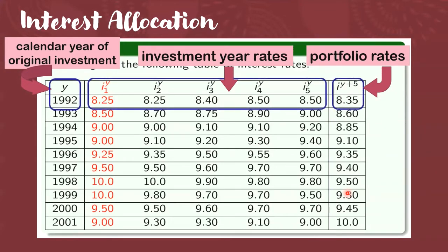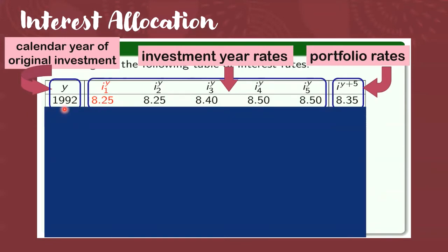So, mag-focus tayo sa mga values na ito. Okay, so we consider the calendar year 1992. Tapos as you can see, here are our notations for investment year rates. So yung mga y dito, palitan nyo ng 1992. Yung I_1^1992, ibig sabihin ito yung rate, ito yung interest rate na gagamitin para sa investment mo. Yung I_2^1992, ibig sabihin nasa second year ka na at ito yung gagamitin interest rate, 8.25. Again, 1992 pa rin yung year dito. Ibig sabihin, nag-start ka ng investment mo noong year 1992 and this is your second year. So parang ganito, ito yung year 1992, ito year 1993, 1994, 1995, 1996.